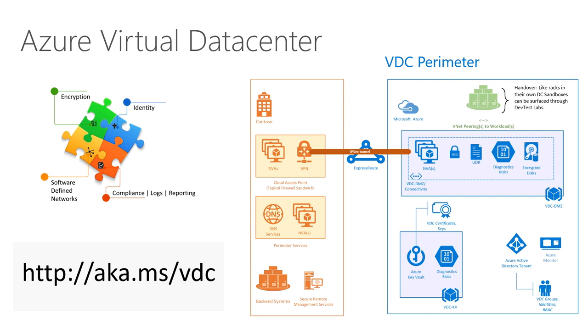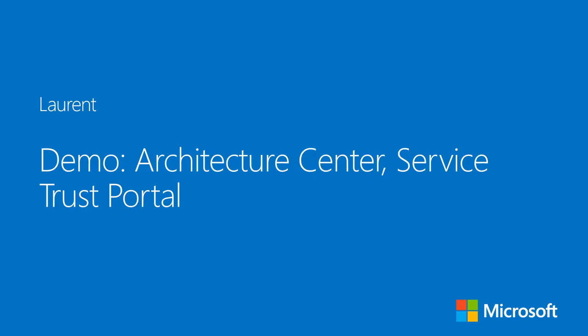The architecture we see on this slide and in the white paper — we'll discover more about this later — is what we call a hub-and-spoke topology. Before diving into that, I propose we take a tour of all the elements we have in terms of architecture, reference architecture, architecture center, and some of the compliance resources we were talking about.